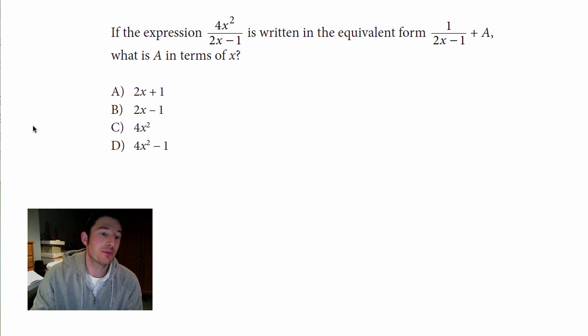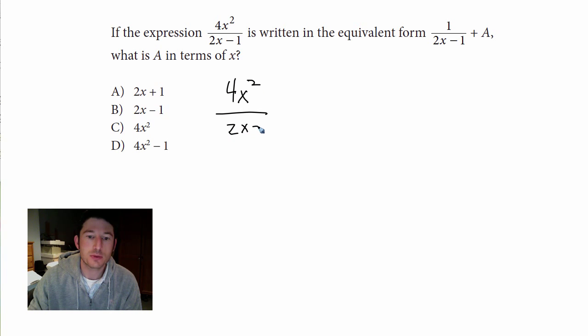Alright, so first thing I'm going to do is, they're telling you these two things are equivalent, I'm going to write that. So 4x squared over 2x minus 1 equals 1 over 2x minus 1 plus A.